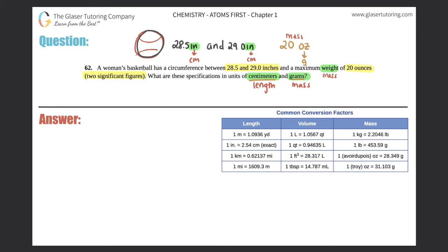Basically, we have to do three conversions here: turn 28.5 inches into centimeters, 29.0 inches into centimeters, and 20 ounces into grams. So let's get started.